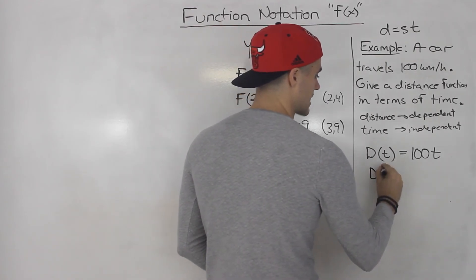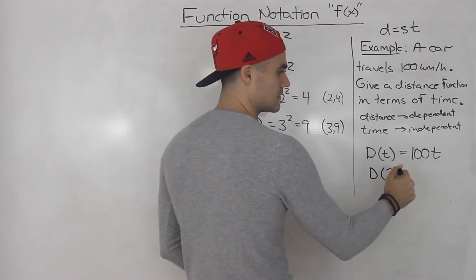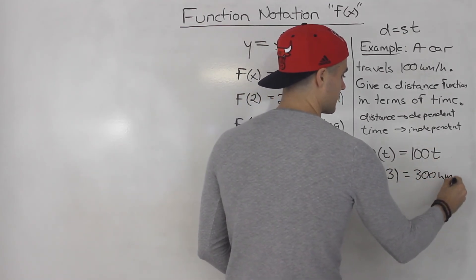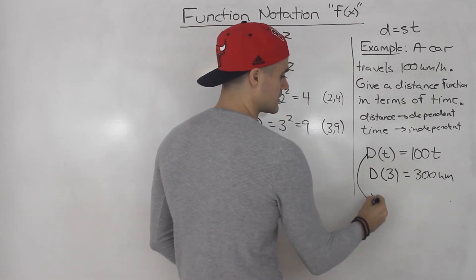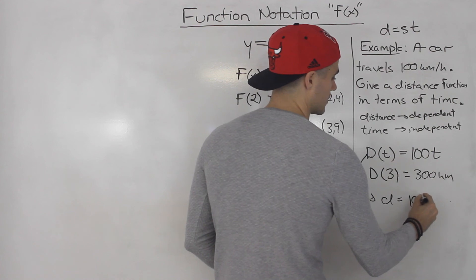If we wanted to know the distance after the car has traveled three hours, we plug in three for t. 100 times three gives us 300 kilometers.